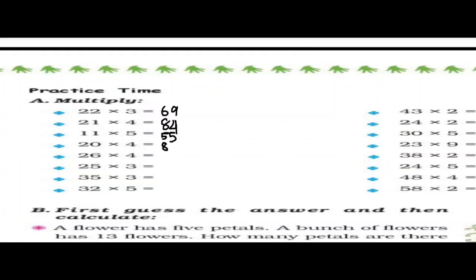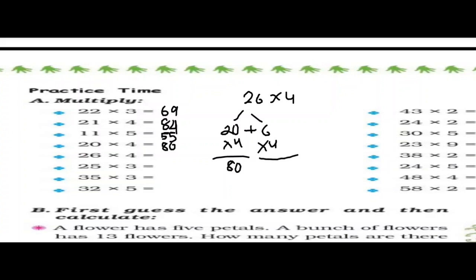I have done 3 sums for you already. Now let us try 26 into 4. We will divide 26 into 20 plus 6, each multiplied by 4. So 20 times 4 is 80, and 6 times 4 is 24. When you add 80 plus 24, that will be 104.